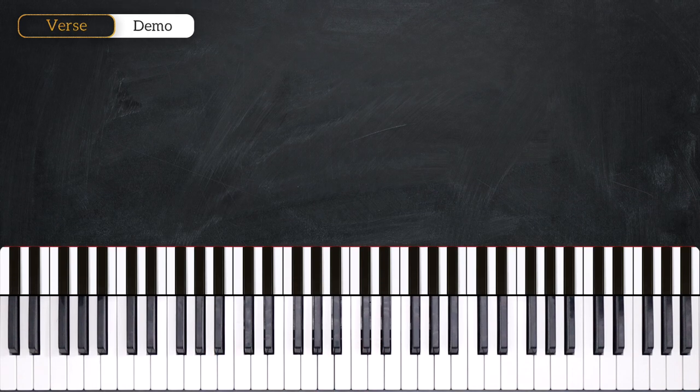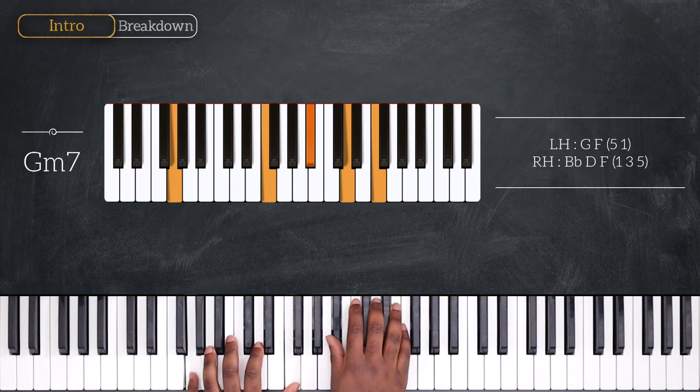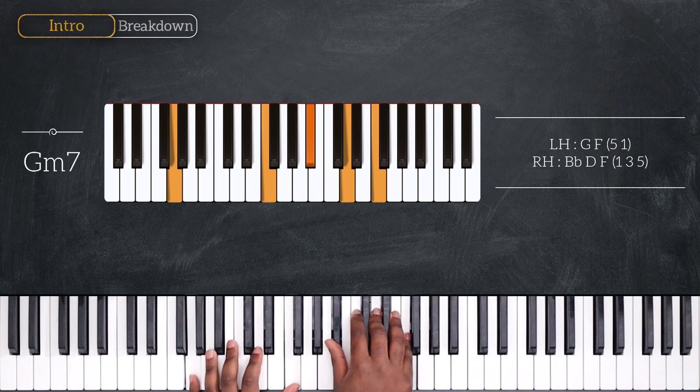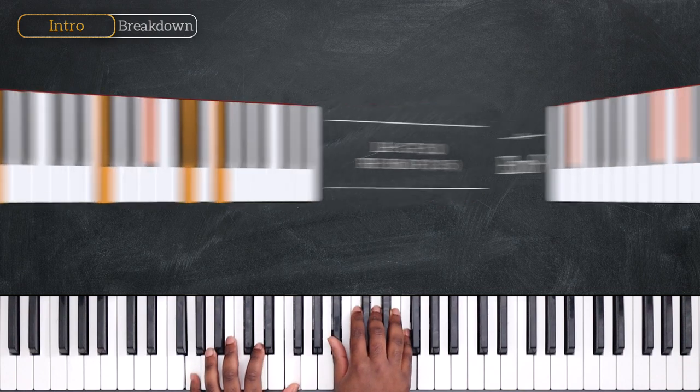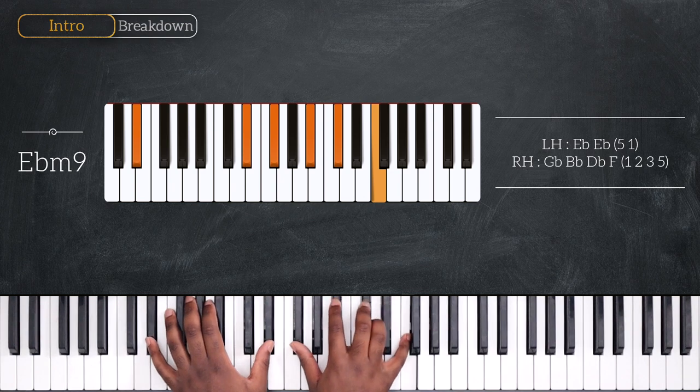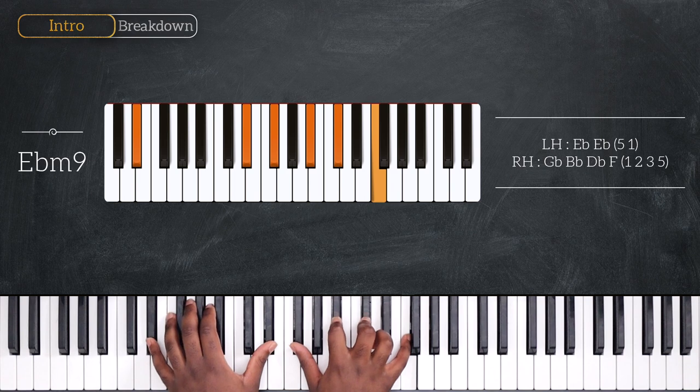We're starting with G minor 7. That's G and F on my left, with B flat, D and F right hand. Playing off key after that with E flat minor 9. Octave E flat, G flat, B flat, D flat and F on top.